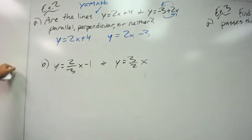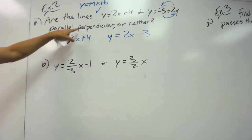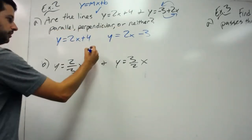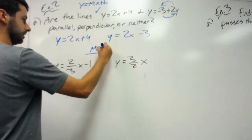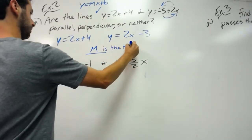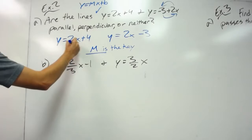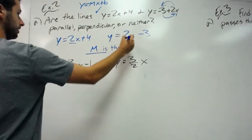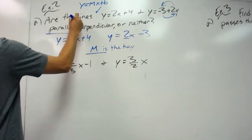Now that we know this, are they parallel, perpendicular, or neither? All you have to do is look at the slope. M is the key. We look at m here is 2, and here is 2. Therefore, they are parallel.